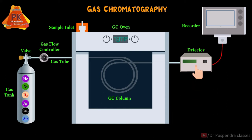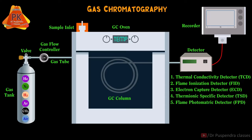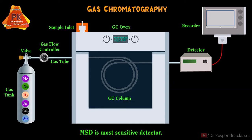Now coming to the detectors used in GC. Various types of detectors are used: thermal conductivity detector (TCD), flame ionization detector (FID), electron capture detector (ECD), thermionic specific detector (TSD), flame photometric detector (FPD), photo ionization detector (PID), and mass spectral detector (MSD). MSD is the most sensitive detector amongst all these detectors.